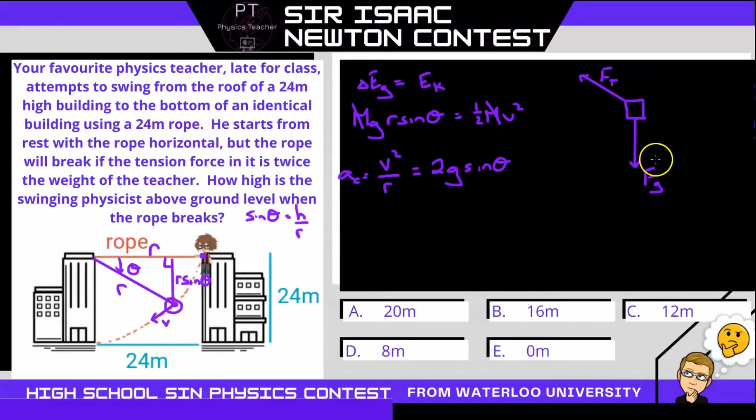Now the direction of centripetal acceleration is along the rope. So it's in the same direction of tension. That's centripetal acceleration. So if we're going to look at the sum of all forces that contribute to centripetal acceleration, well we have tension, but then we also need to figure out what component of gravity is contributing to centripetal acceleration.